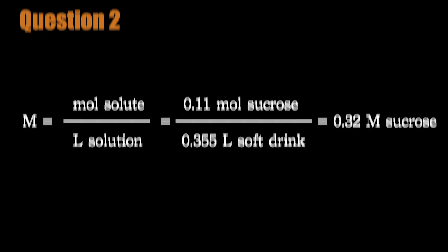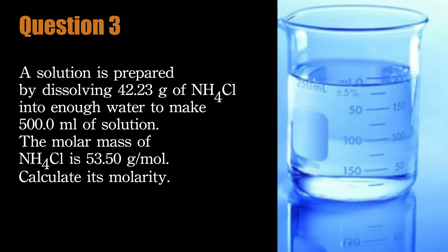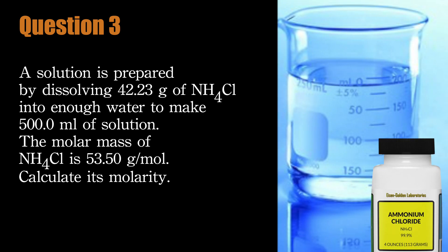Let's look at one more example. Question 3. A solution is prepared by dissolving 42.23 grams of NH4Cl into enough water to make 500 milliliters of solution. The molar mass of NH4Cl is 53.5 grams per mole. Calculate its molarity.